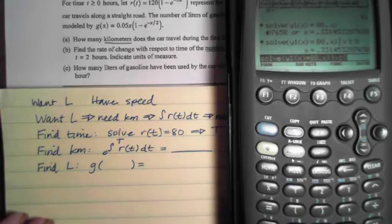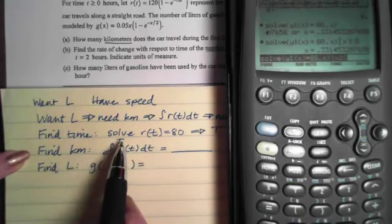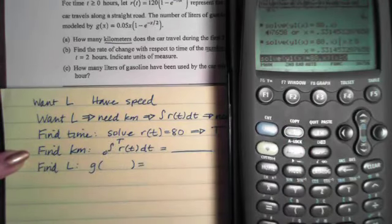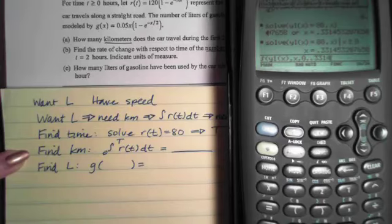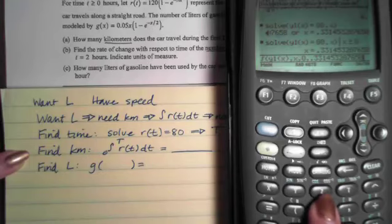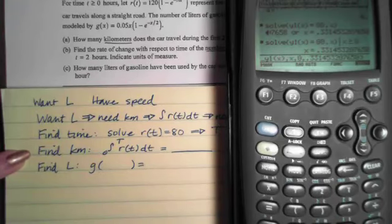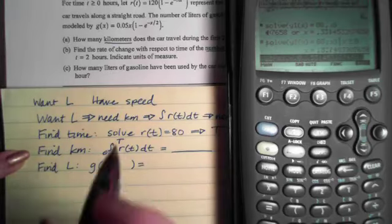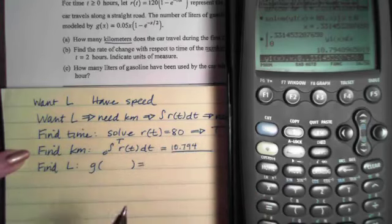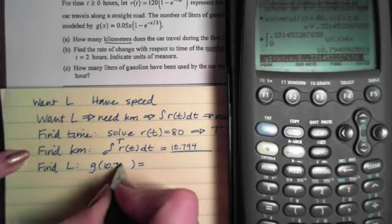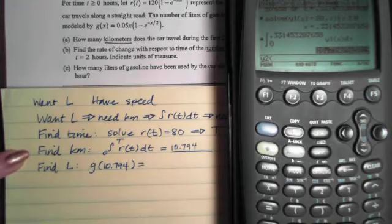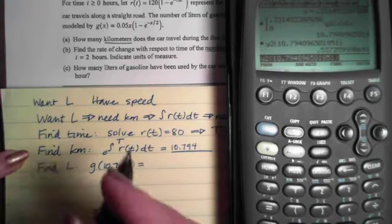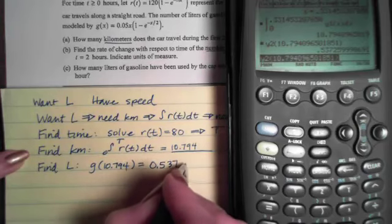So now if I want to find the kilometers, I need to take that time and use it as I'm accumulating. So that means I'm going to accumulate now on y1(x) with respect to x from 0 up to that time, which is 0.331453207658. Hit enter. And this will tell us the number of kilometers that we have traveled, which is 10.794. And now I need to take that number of kilometers and plug it into the g function. So that was stored in y2. So I can do that on my calculator by typing y2, coming up to the 10.794, turning it black. If I hit enter, I get all those digits without having to worry about rounding error. And I can hit enter and I get 0.537 liters of gasoline.